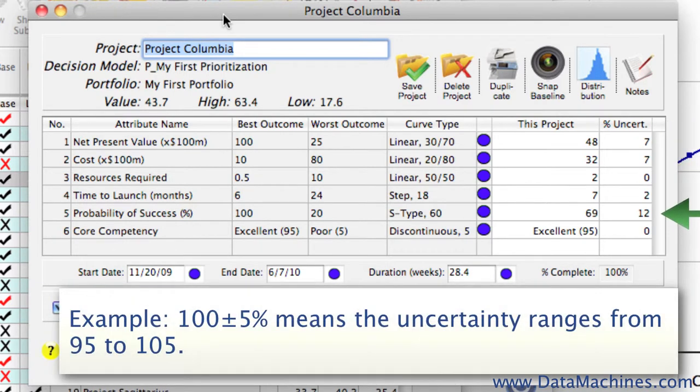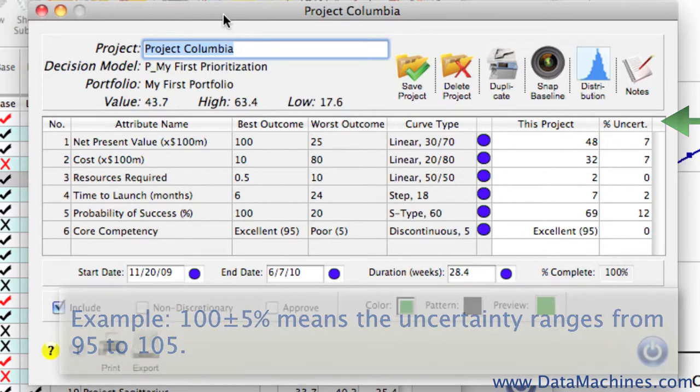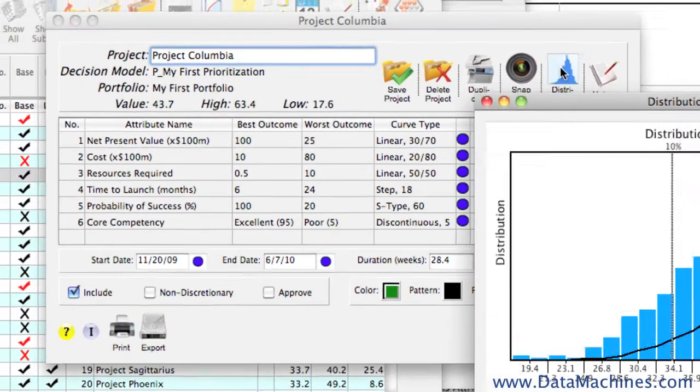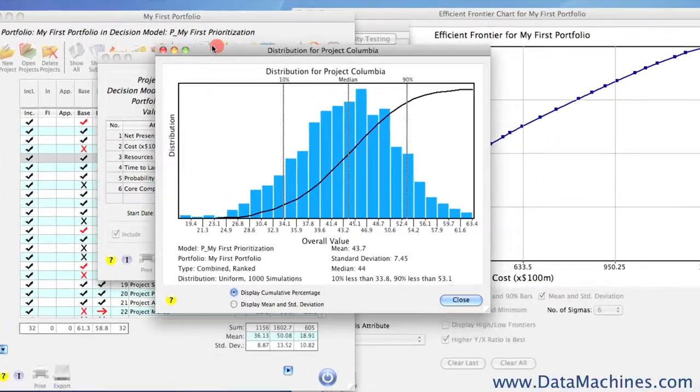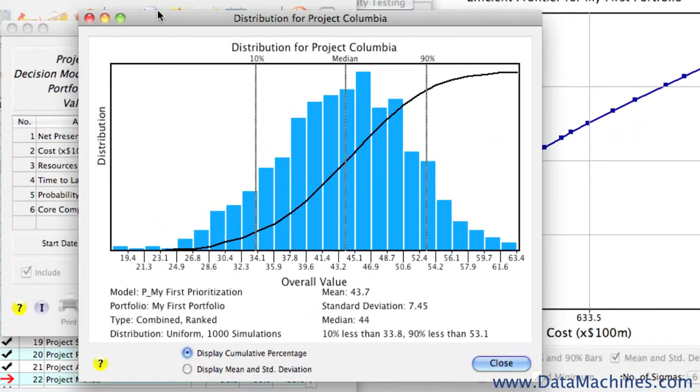The percentage is a plus minus value, so for example, a project that has a cost of 100 plus or minus 5% associated with it means that the range of uncertainty in that cost value is between 95 and 105. You can see that when we click on the distribution button at the top of the form, the distribution associated with the project appears. The cumulative distribution curve display lets you see where your 10%, 90%, and median lines are for each project, so you can see what your expected outcomes are.